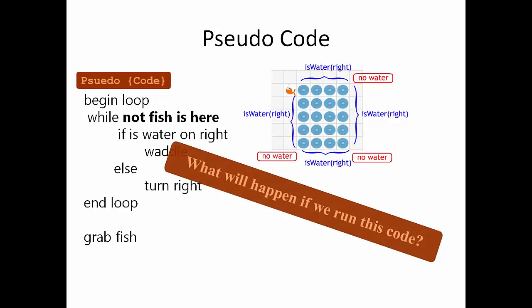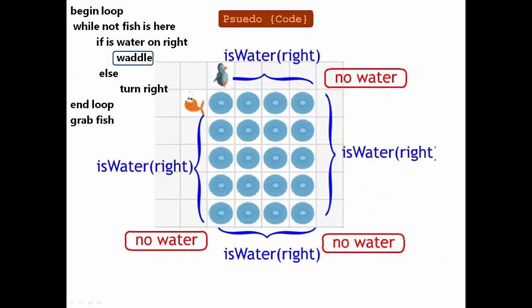So now, what will happen if we run this code on this map? As you can see, Pam starts above the top left corner of our box of water here. And according to the loop, she will continue to waddle until if is water on the right is no longer true. When she gets to the corner, it's no longer true, and the else part of the statement executes, and Pam turns right.